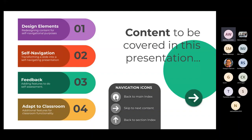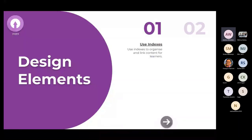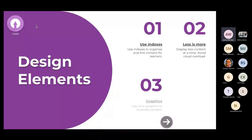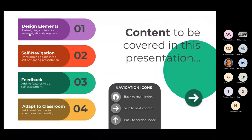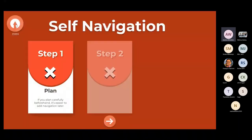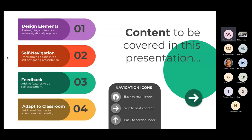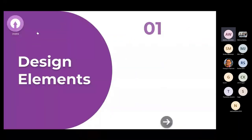On the first slide, there's an indication of what the navigational icons are: the index button, a right arrow to skip to the next content, and an up arrow to go back to the previous slide. If I click on 'Design Elements,' it takes me to that section. If I click the index again, it pops right back. The first time I saw that, I just thought — that's magic, and I promise you it's not as tricky as you think.